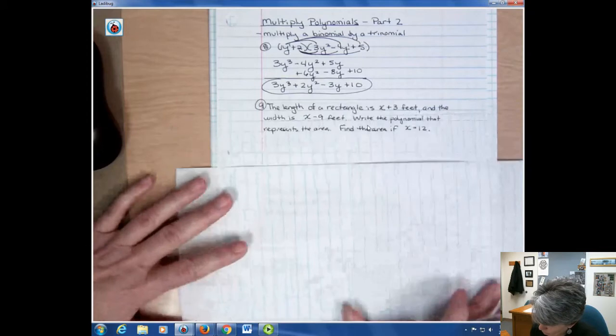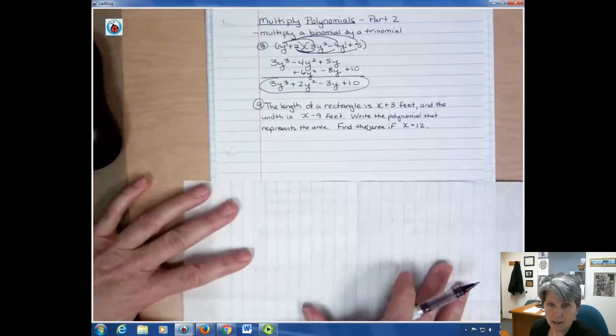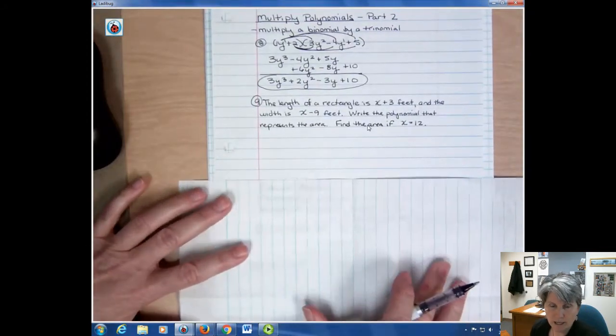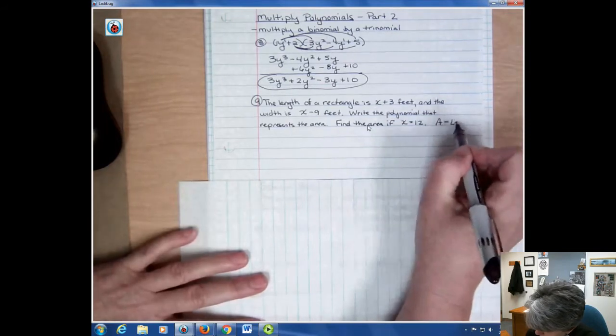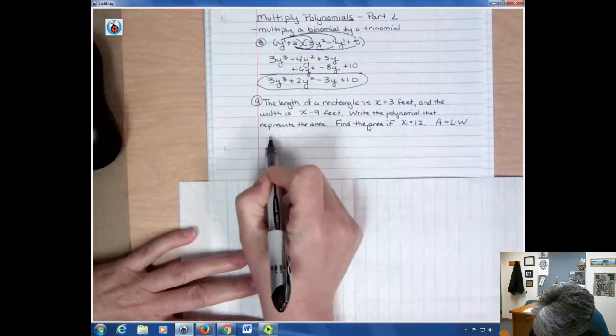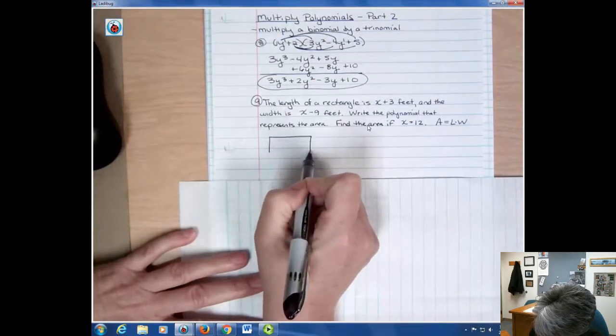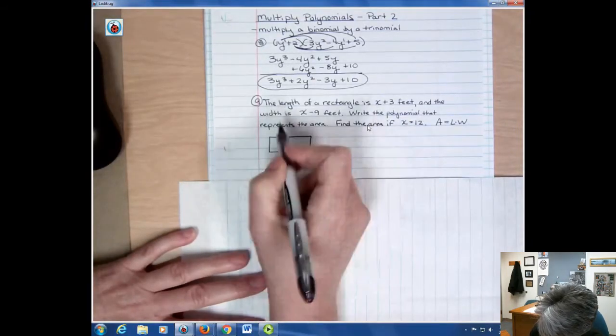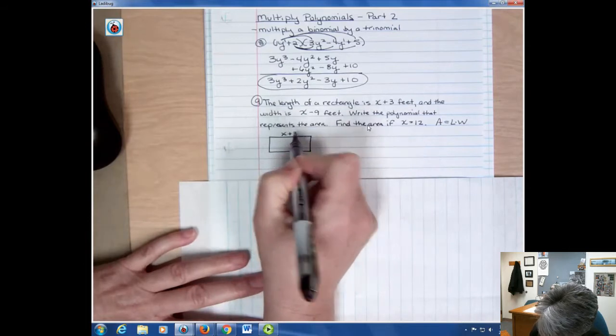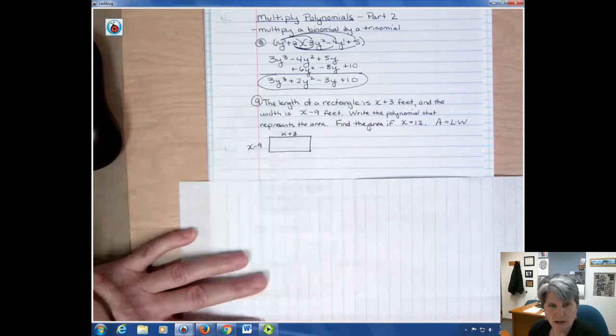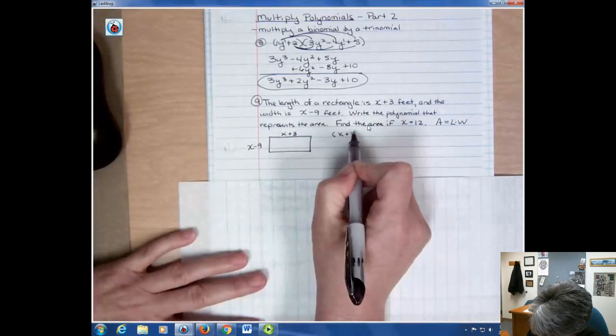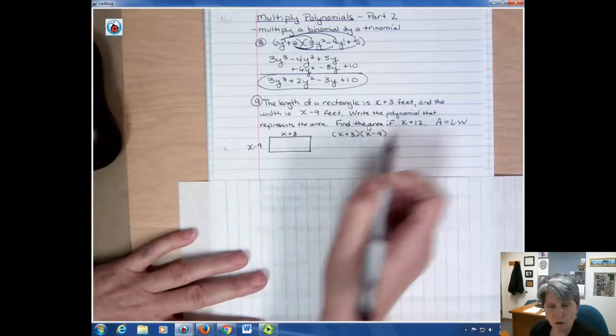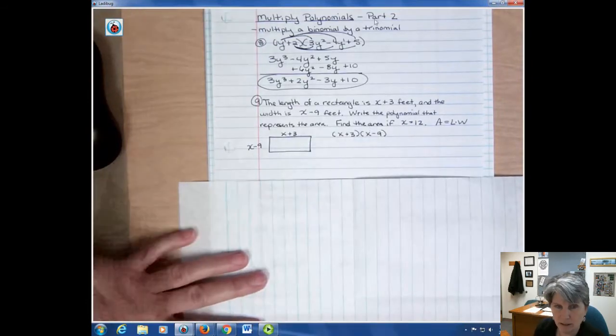So here's a word problem. The length of a rectangle is x plus 3 feet and the width is x minus 9 feet. Write the polynomial that represents the area. Well remember that area equals length times width. So here's my rectangle. And the length is x plus 3 and the width is x minus 9. So to find the area of that, I just take x plus 3 times x minus 9. It's just a foil problem, right? Because that would be my length times my width.